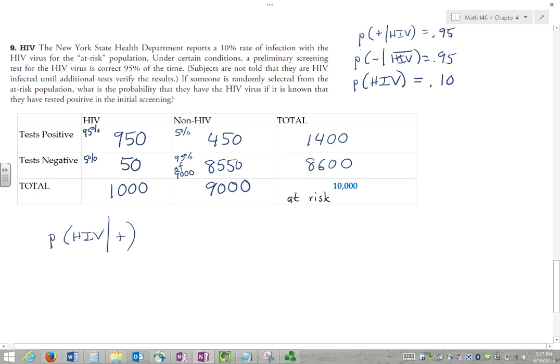Now you might think that's 0.95, but no, 0.95 is positive given HIV. We're talking about HIV given positive, and those are two very different things.